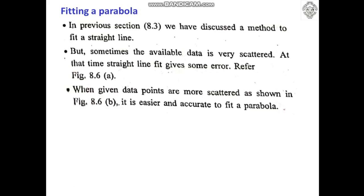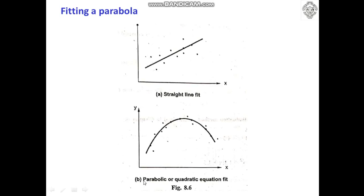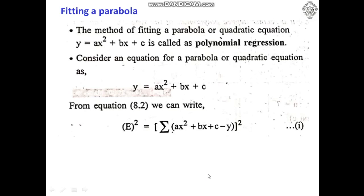For cases where the data is very scattered, fitting a straight line may produce error. For case B, where the data is very scattered, fitting a parabolic or quadratic equation will definitely help for accurate prediction. The method of fitting a parabola or quadratic equation Y = AX² + BX + C is called polynomial regression.